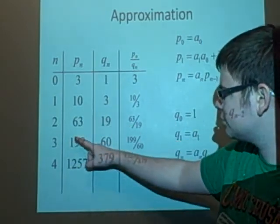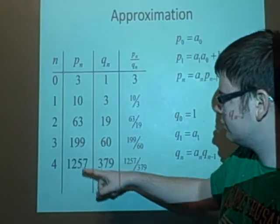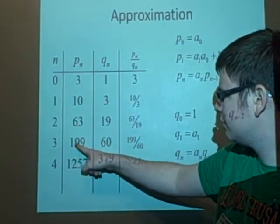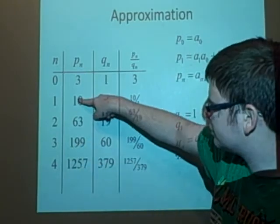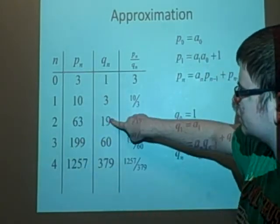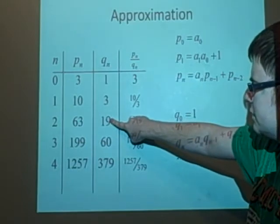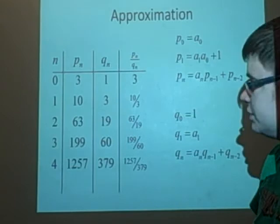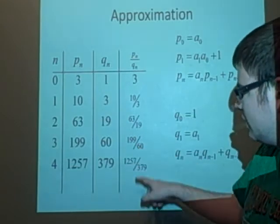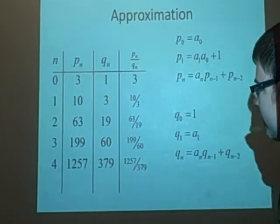And then we do it again, so now we've got a 3 next. So we multiply this by 3, which gives us 189. Then we add the 10, 199. This times 3, 57, plus 3 is 60. That's why I was going to do it in the table, 199 over 60. And this one as well, this is really close.